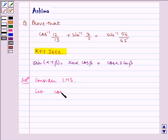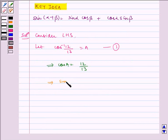Let cos inverse 12 by 13 is equal to A. Let us name this as equation 1, which implies cos A is equal to 12 by 13. And then by using Pythagoras theorem we get sin A is equal to 5 by 13.